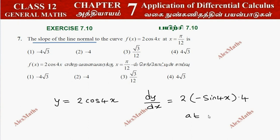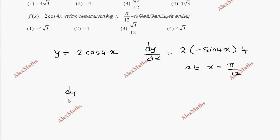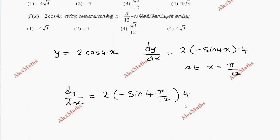At x = π/12, we substitute into dy/dx: 2 into minus sin(4 × π/12) into 4. Simplifying the angle: 4 × π/12 = π/3. So we have minus sin(π/3), and sin(π/3) = √3/2.